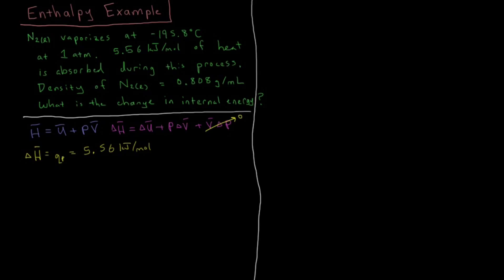So delta V bar, change in the molar volume. Well, we're vaporizing, so we're going from a liquid to a gas. So it could be quite a lot of difference in the volume that a gas occupies versus a liquid, because gas particles are very spread out, and in liquid they're fairly condensed. Our delta V bar is going to be the final minus the initial molar volume, the molar volume of the gas minus molar volume of the liquid.